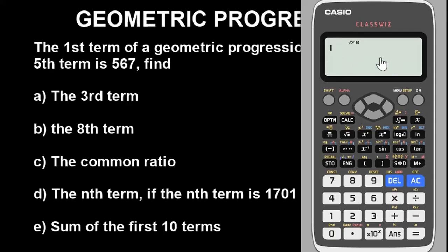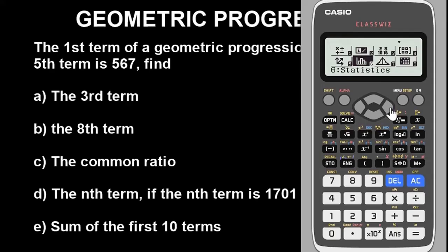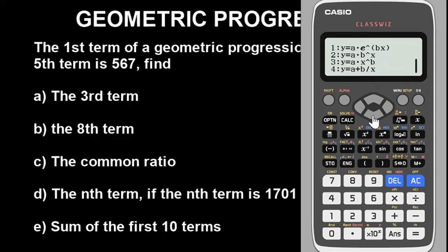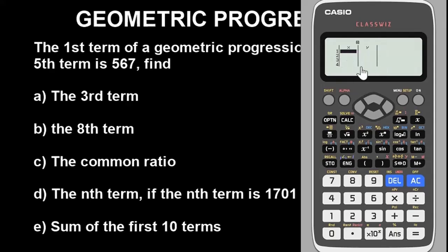The next thing is to put the calculator in the mode that enables us to solve geometric progression, which is statistics mode. Go to the Menu and look for Statistics — on this calculator it is option 6. Press 6, then press the downward key once. You will see the options; press 2 for geometric progression.